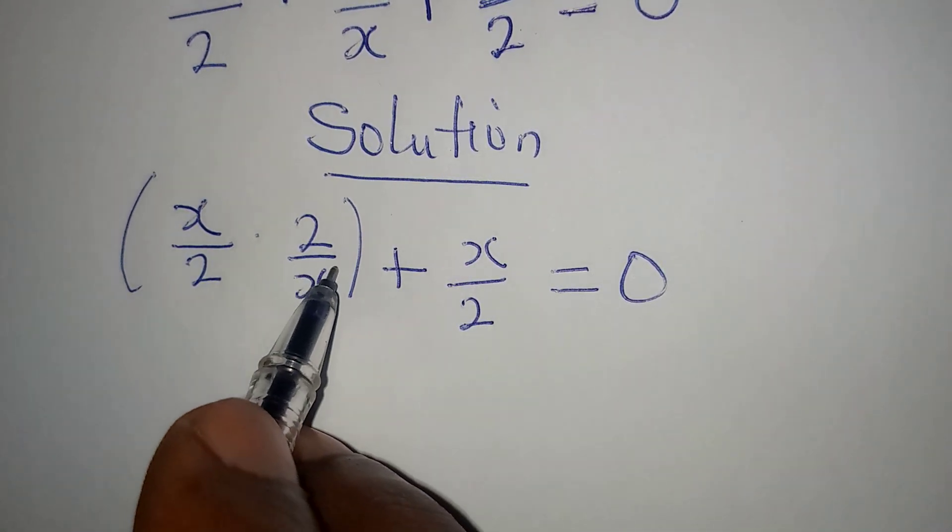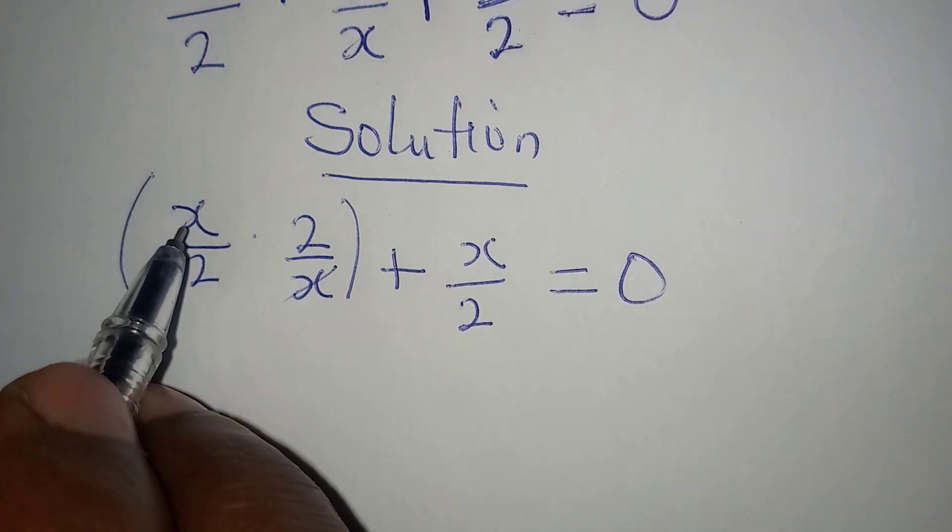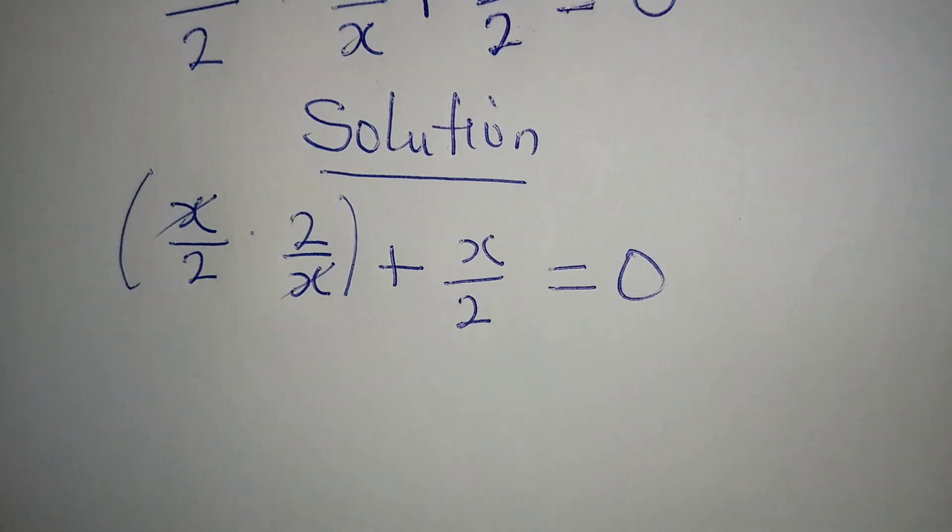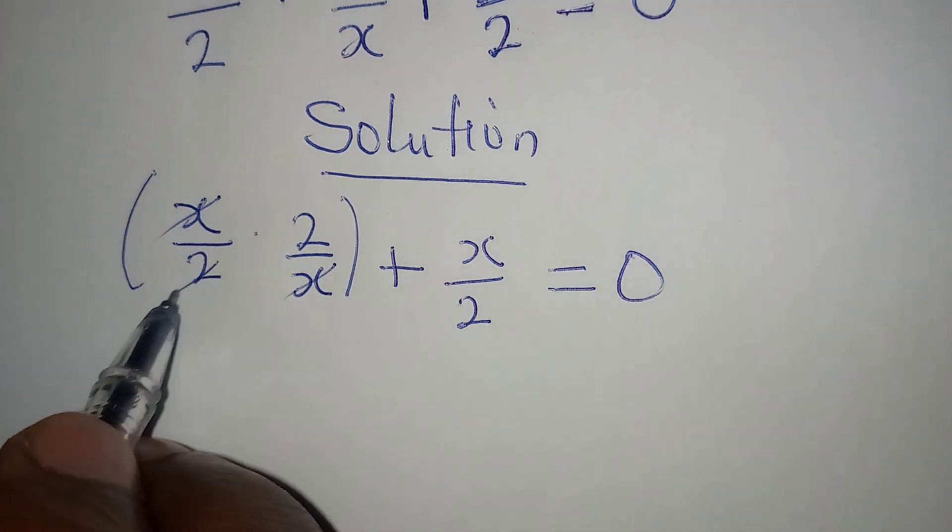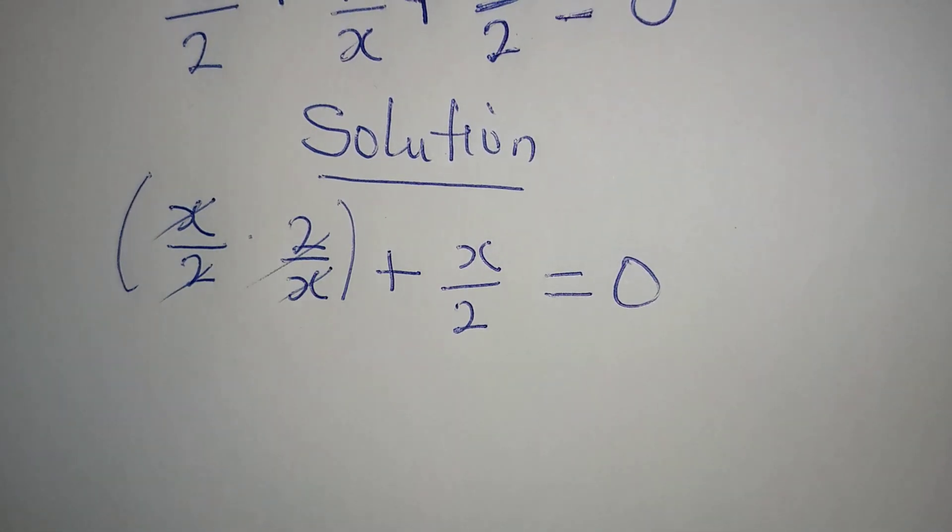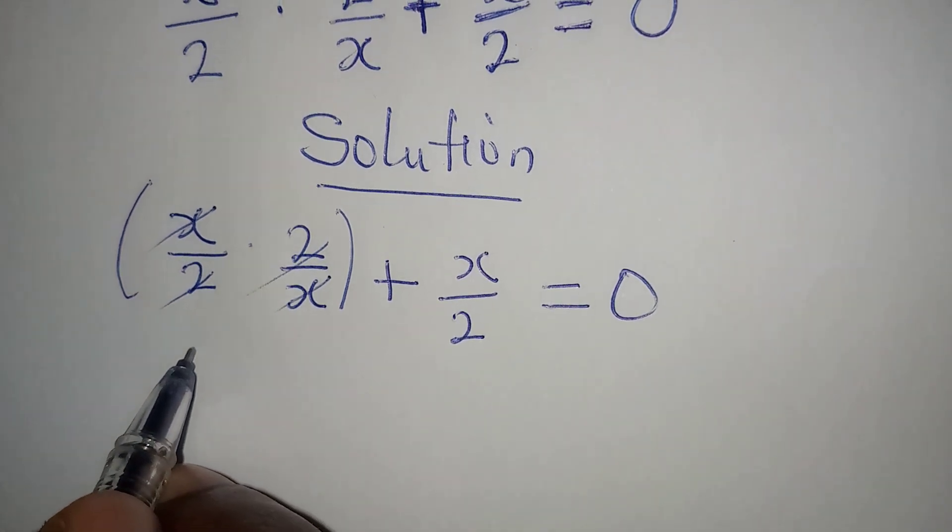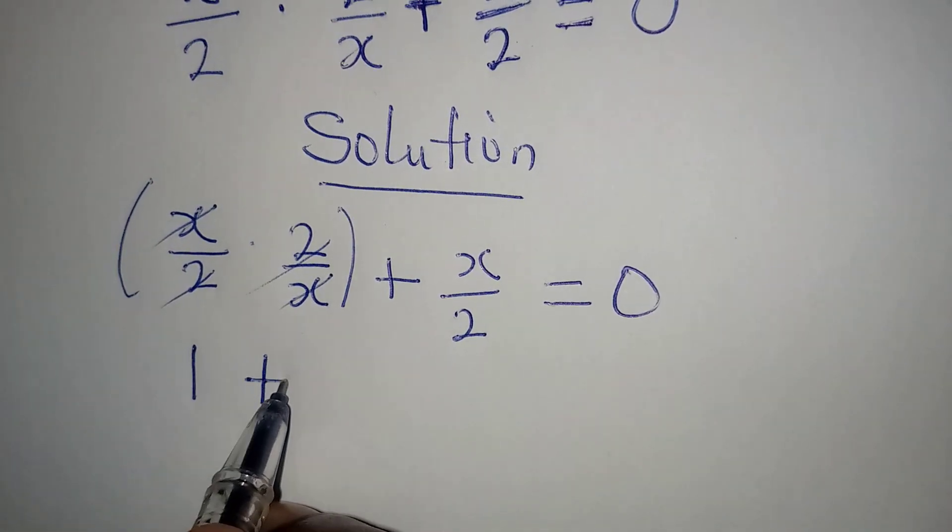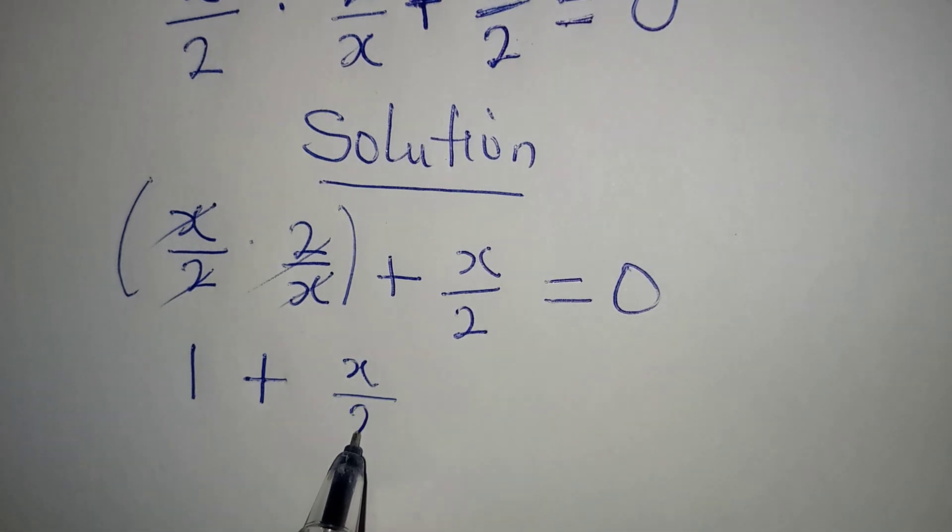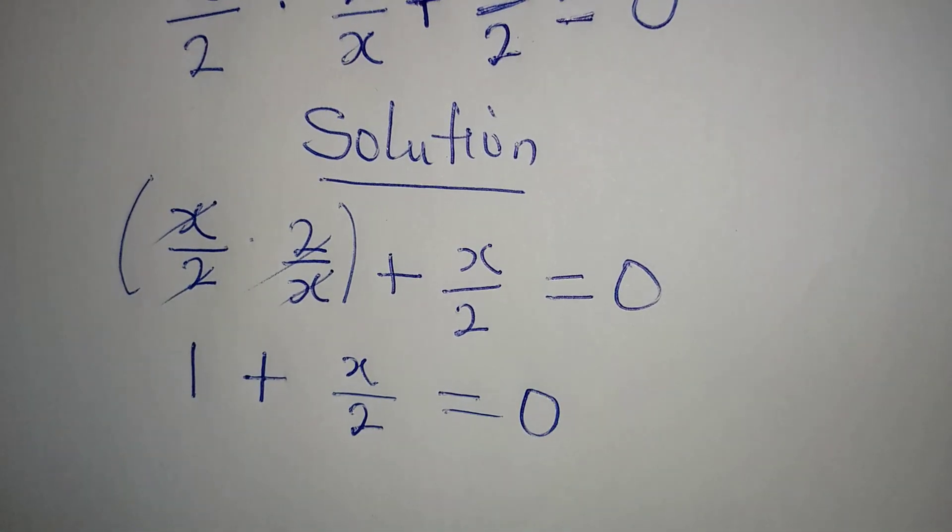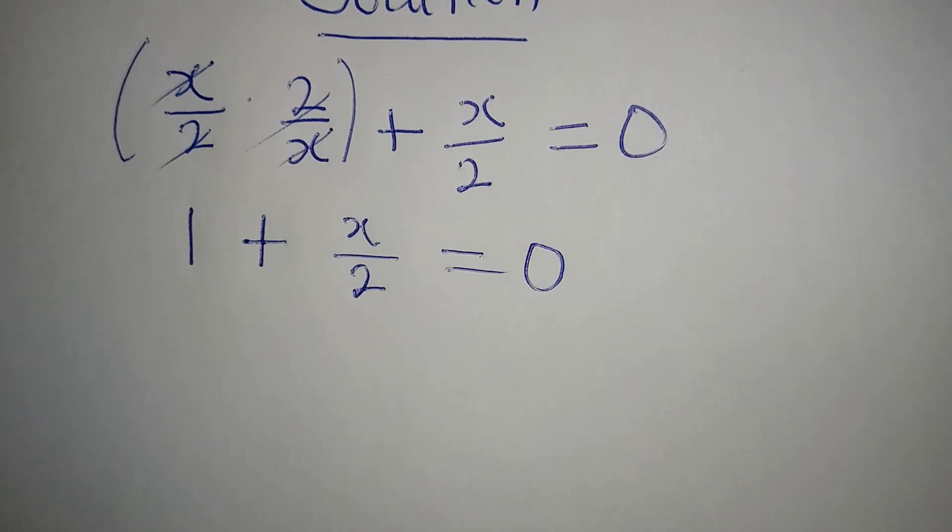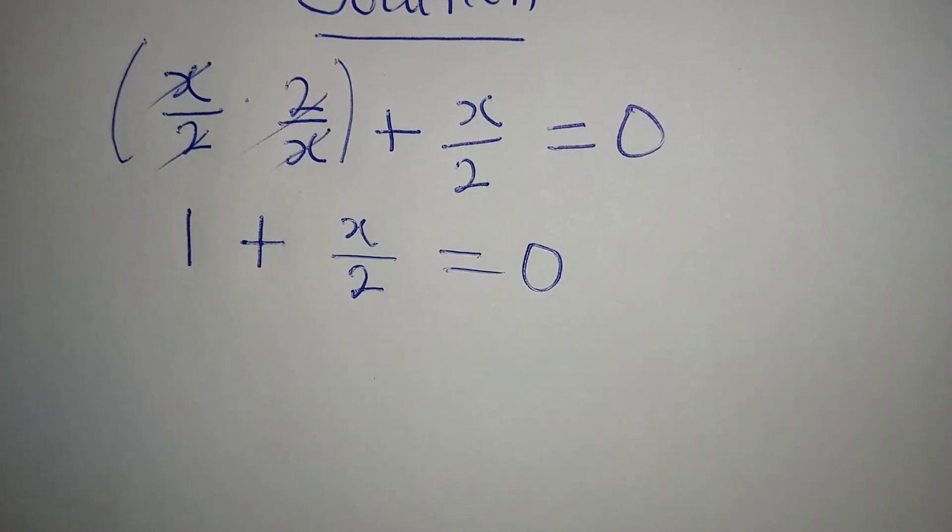This and this can simply cancel each other, so we're going to have 1 plus x over 2 is equal to 0. So were you expecting to see something like this?